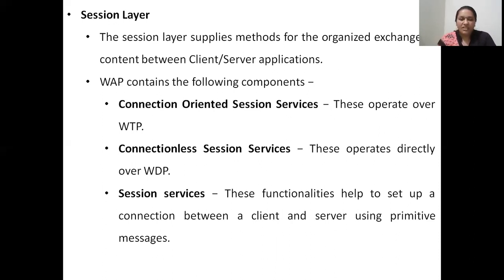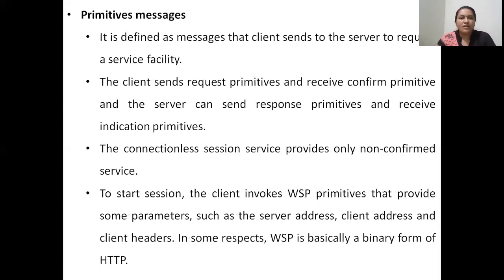To establish a connection, the session layer makes use of primitive messages. Primitive messages are special messages which the client sends to the server in order to request a service facility. The client will send request primitives to the server and will receive confirm primitives. The server can send a response primitive and the client can receive indication primitives. So whatever messages are exchanged between clients and servers are termed as primitive messages in the WAP session layer. The connectionless session services do not provide confirmed services — they always provide non-confirmed services. If connection-oriented session service is used, then confirmed services can be utilized.